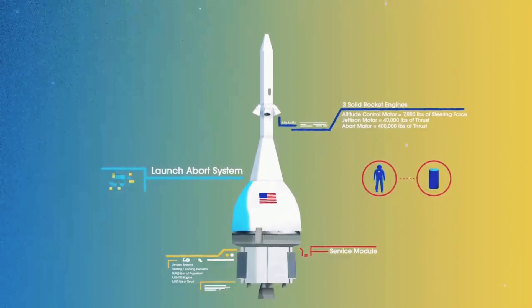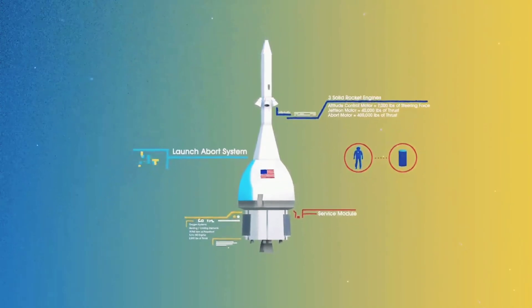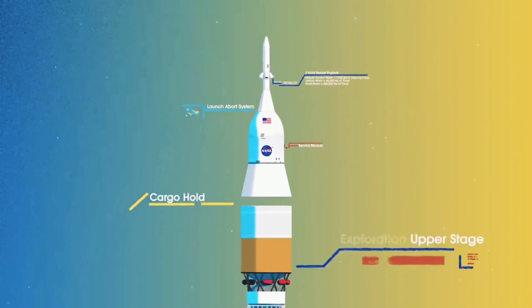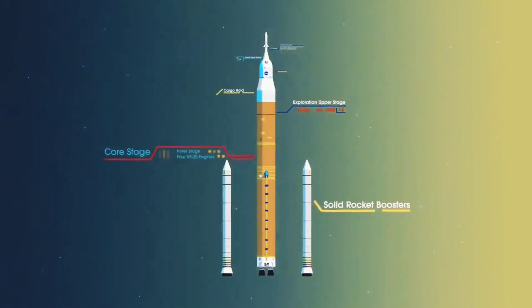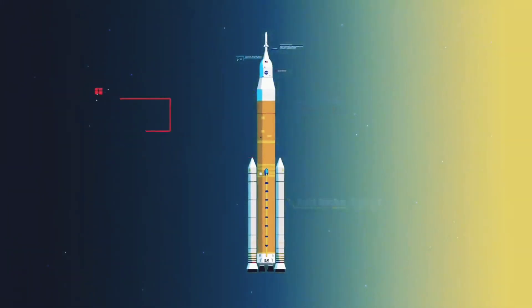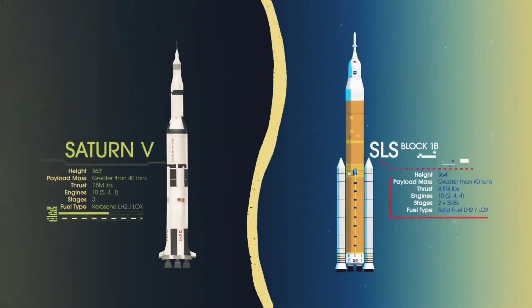To accomplish the task of launching our crew and heavy payloads, NASA is building the Space Launch System, comprising of a cargo hold, an exploration upper stage, a massive core stage, and two extended solid rocket boosters. Altogether, this is the world's most powerful rocket, and it exceeds the legendary Saturn V of the Apollo era in numerous ways.